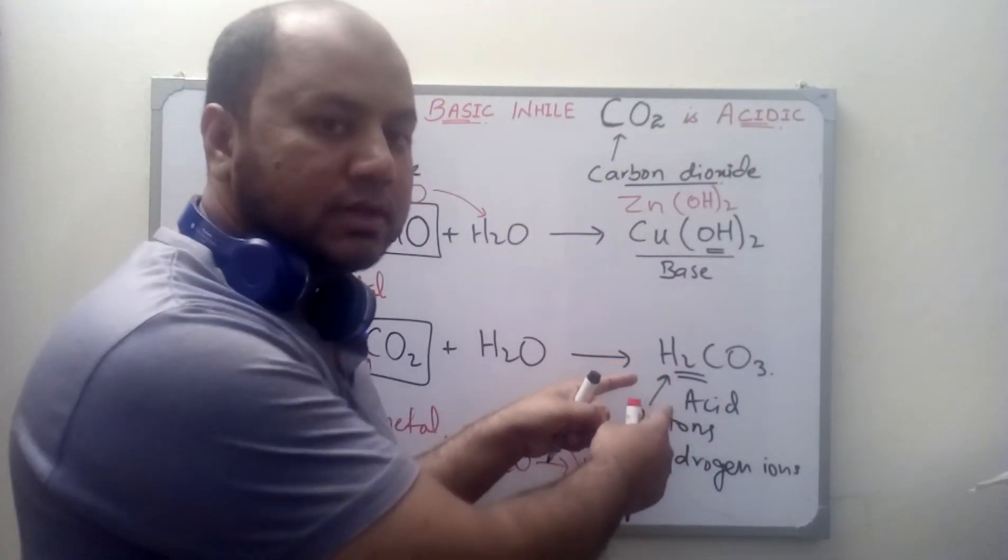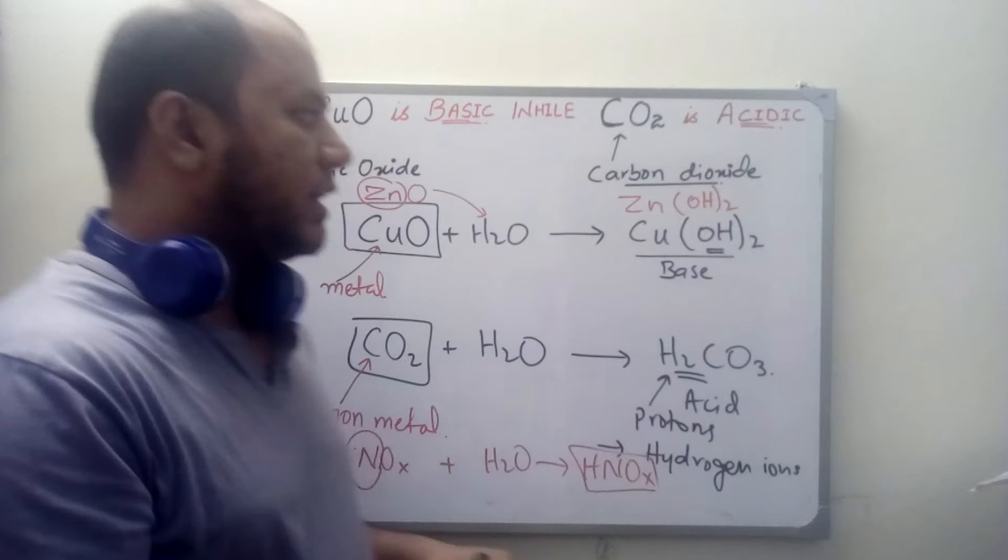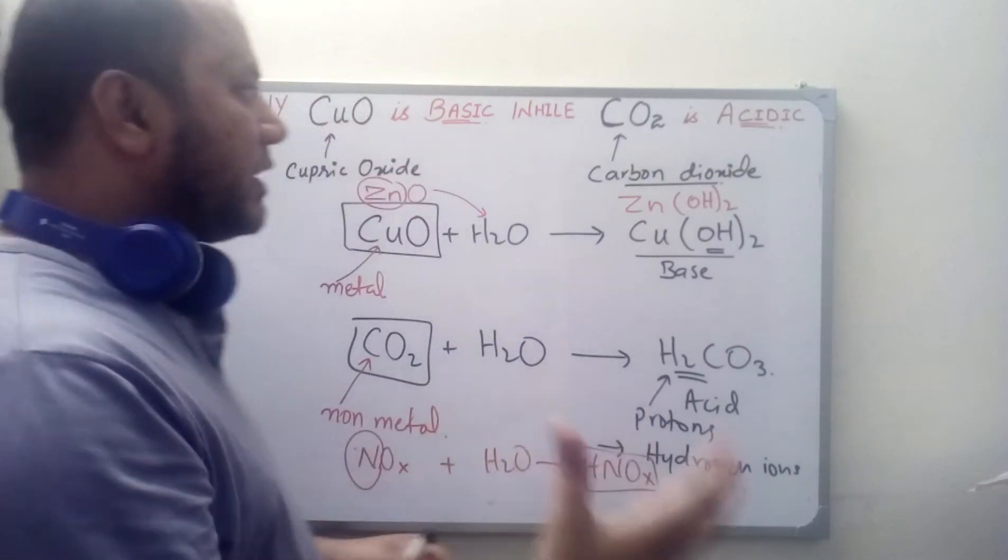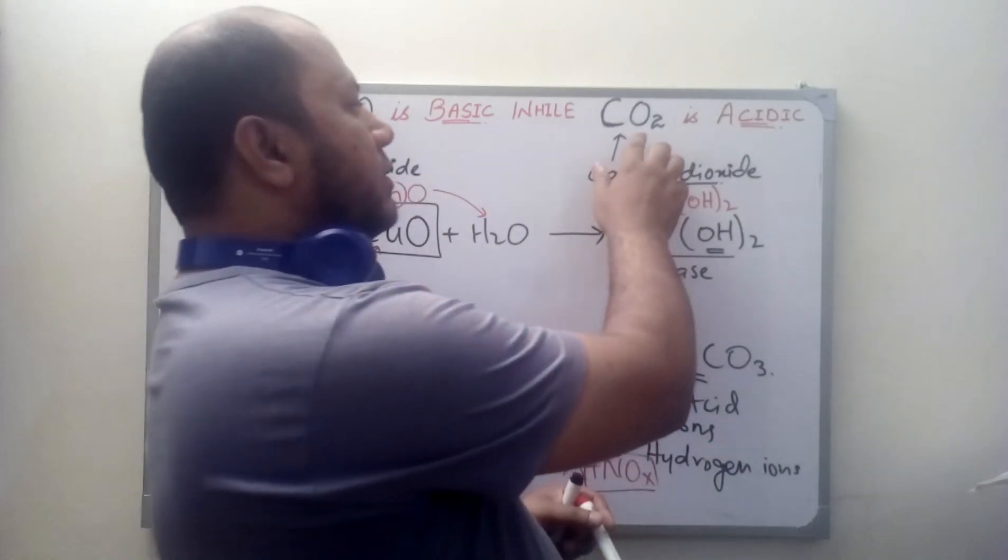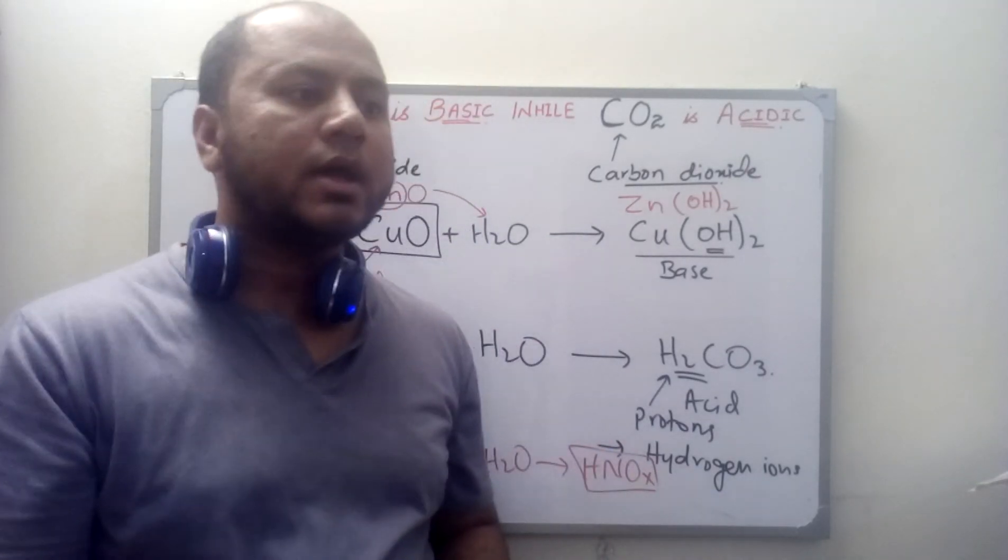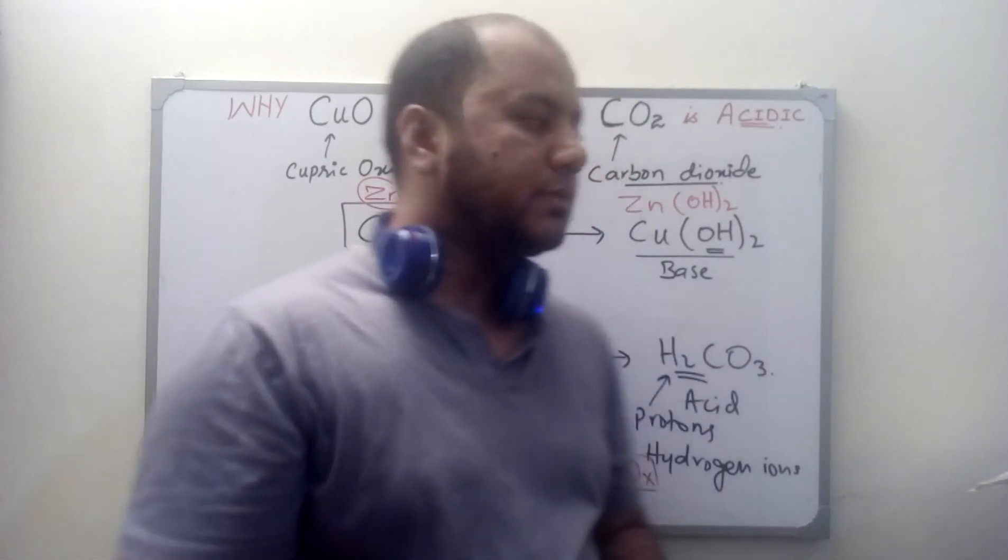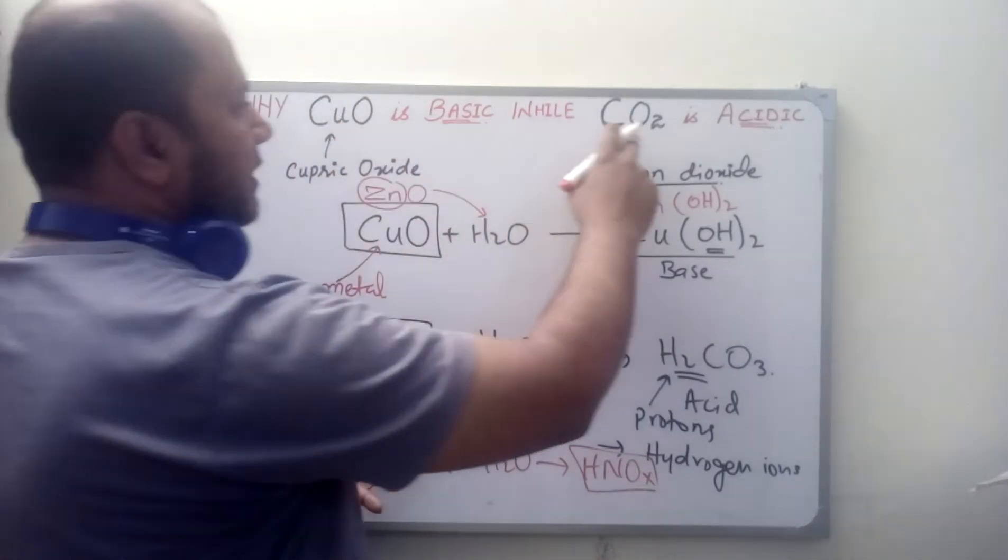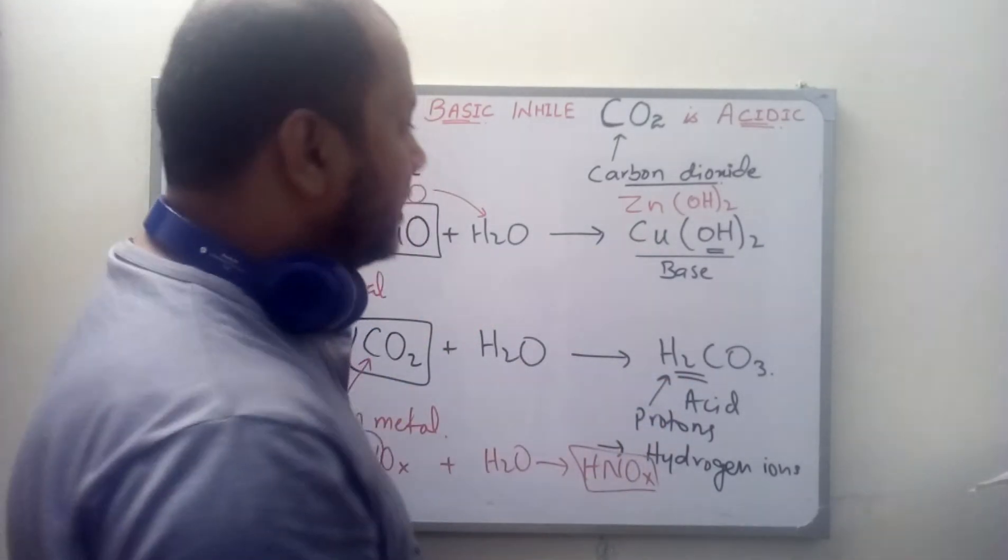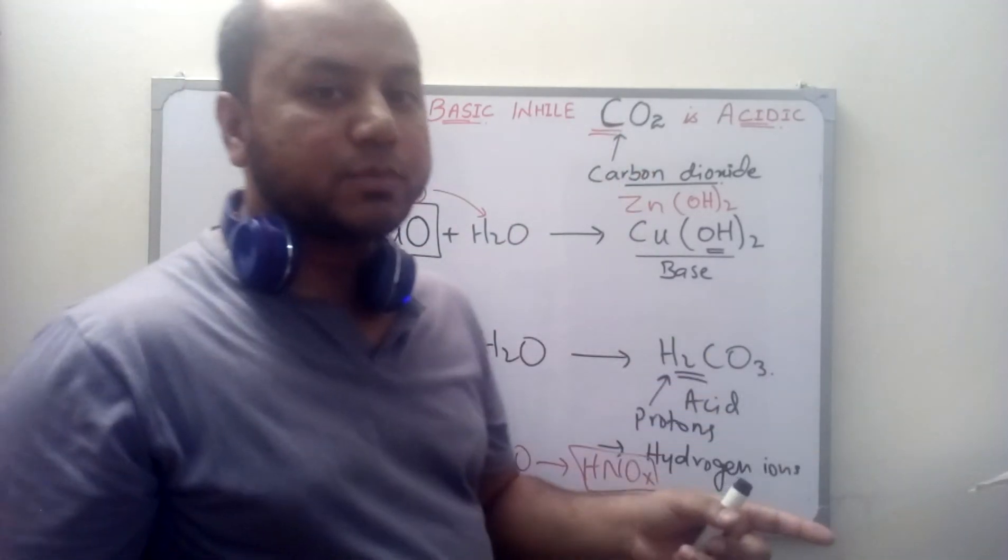According to Lavoisier, a great scientist in history, he depicted that whenever a binary compound of oxygen is added in water it can give you an acid or a base. It's quite prehistoric thinking, but today we know that whether it's basic or acidic depends upon the products they produce. How we can get the hint is if it's a non-metal then definitely the product is acid, and if it's a metal then the product is base.